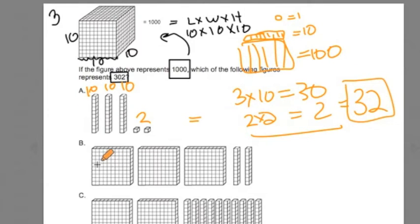Let's do this one. I got a flat, which is a hundred, a hundred, a hundred, and I got two tens. So this is 300 plus 20, 320.